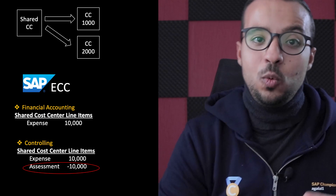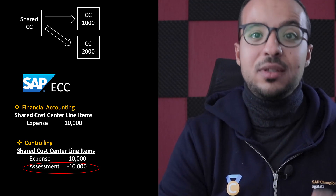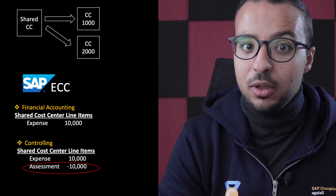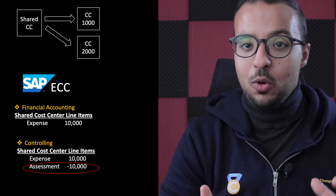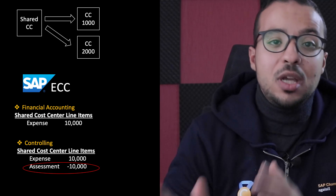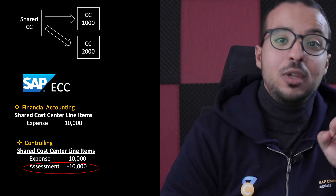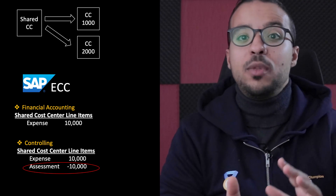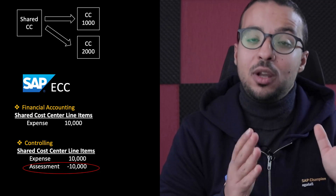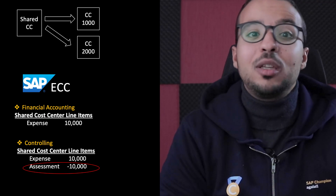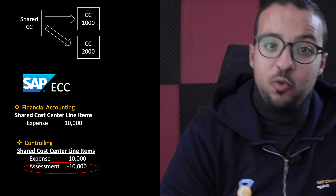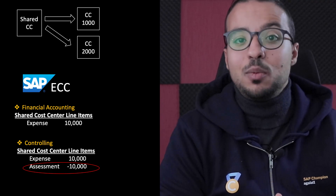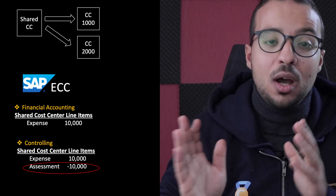In SAP ECC, when we do the cost assessment, the entry happens only internally in the controlling area and we cannot see it in financial accounting. After running the cost assessment, if we run the GL line items report for our cost center, we will only see one line item posted from our accounting entry for the invoice. From the controlling side, we will find multiple line items — the one from the invoice and then the lines from the assessment — but the assessment lines are not automatically interfaced to financial accounting.